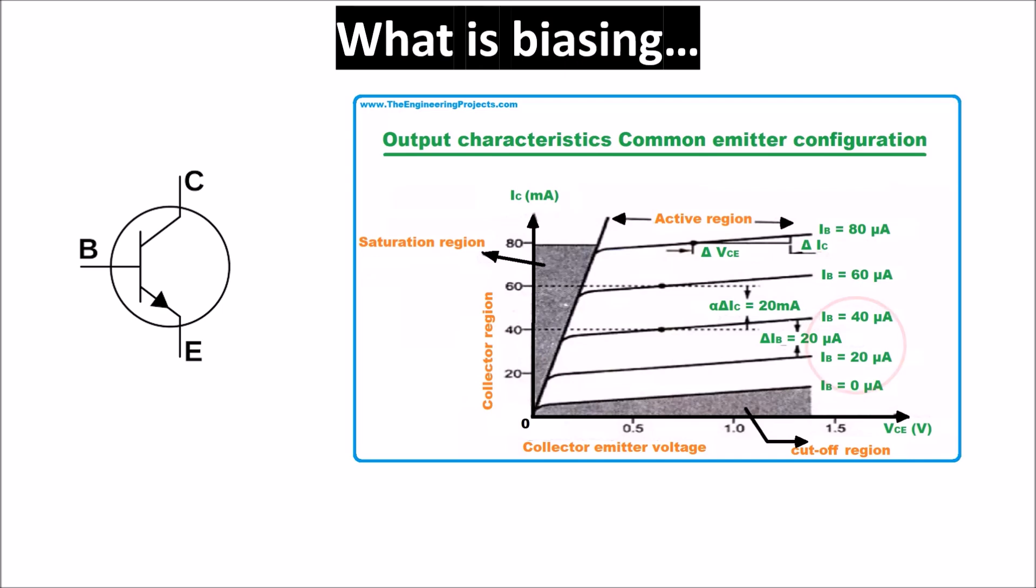In the active region, you can see a small delta in the base current, 20 microamps, creates a much bigger and linear amplification in the collector current, 20 milliamps, under the small signal hypothesis. So for the use of a small signal amplifier, you have to set this quiescent point in the active region, so you have to find the right IC current and VCE voltage for your BJT.